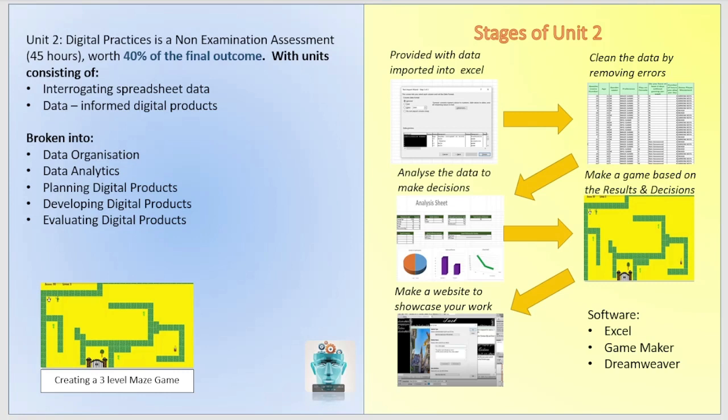There are different stages. First, you'll have a set of data in a text file that you'll need to import into Excel. That data has been programmed to be full of errors, so the first thing you'll need to do is clean the data. This could mean duplicate records, missing data, data with spaces, data that needs to be in uppercase, or data that needs to be trimmed. Once you've cleaned the data and removed all the errors, you can move on to stage three: analysing the data to make decisions.